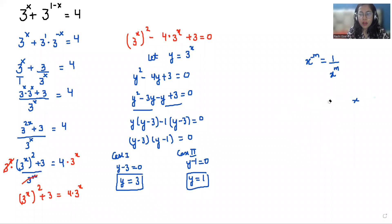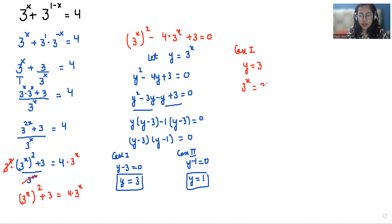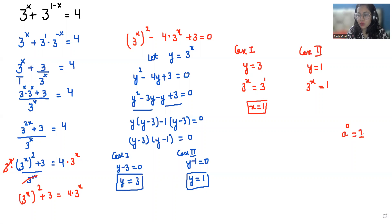Now we recall that we assumed y equals 3^x. Substituting back for Case 1: y equals 3 means 3^x equals 3, and comparing both sides the value of x is 1. For Case 2: y equals 1 means 3^x equals 1. Since any number to the power 0 equals 1, we write 3^x equals 3^0, so the value of x is 0.